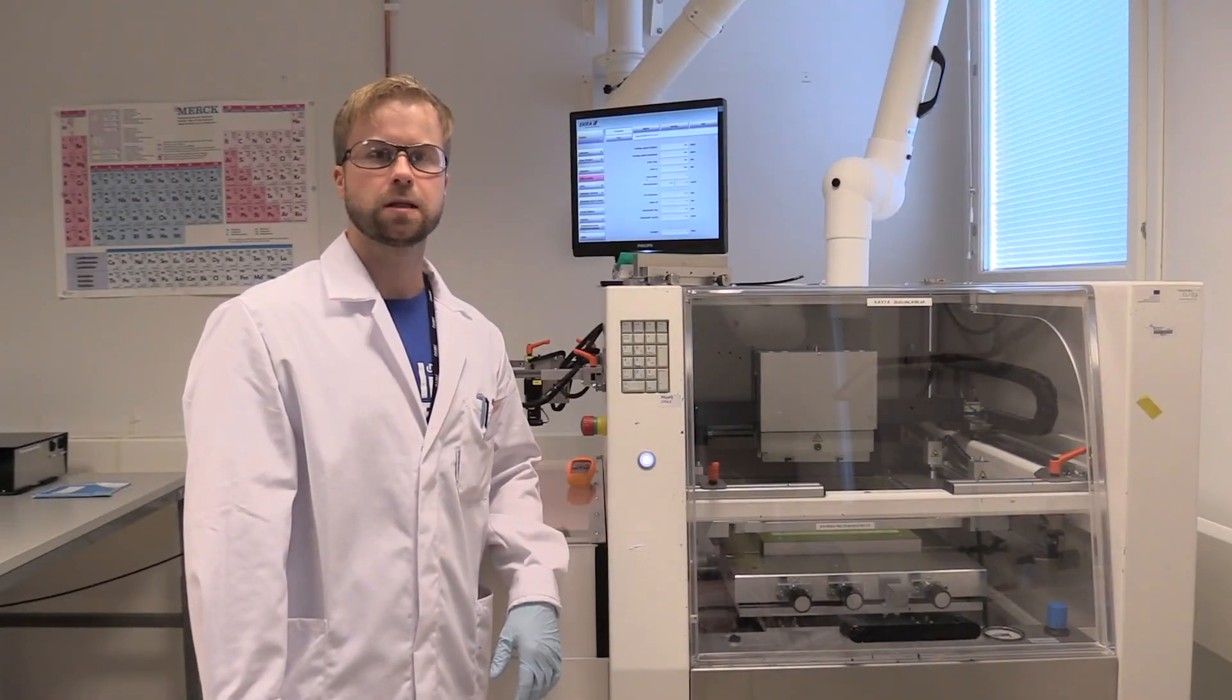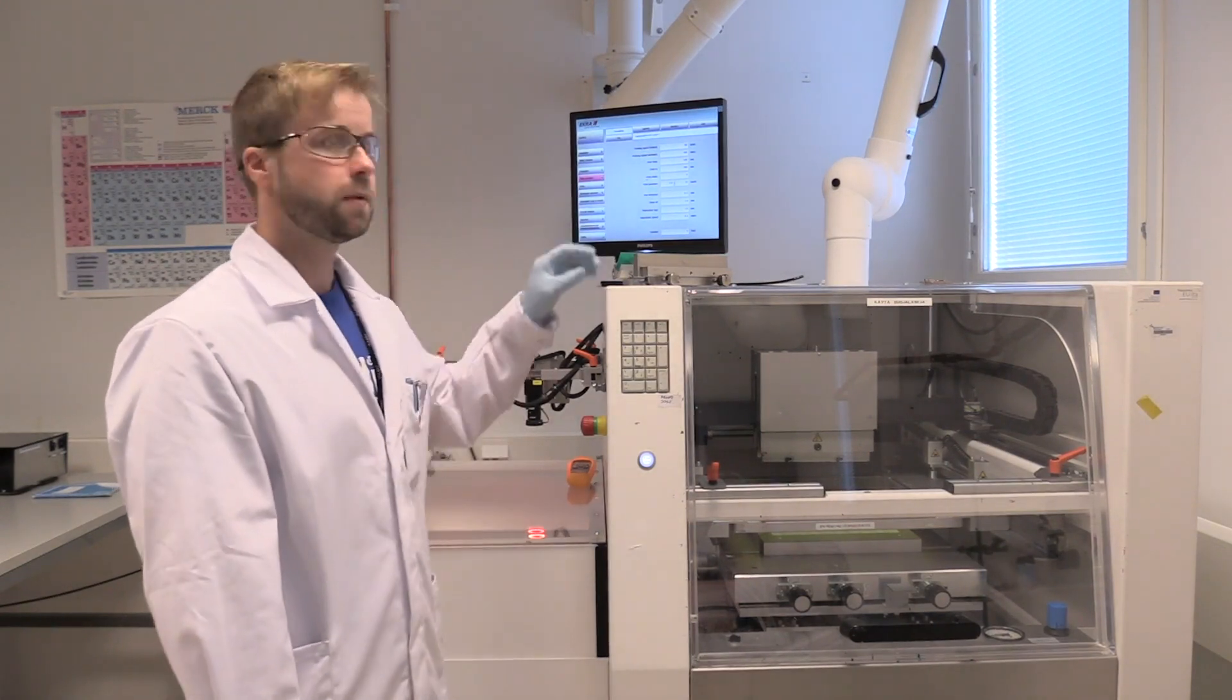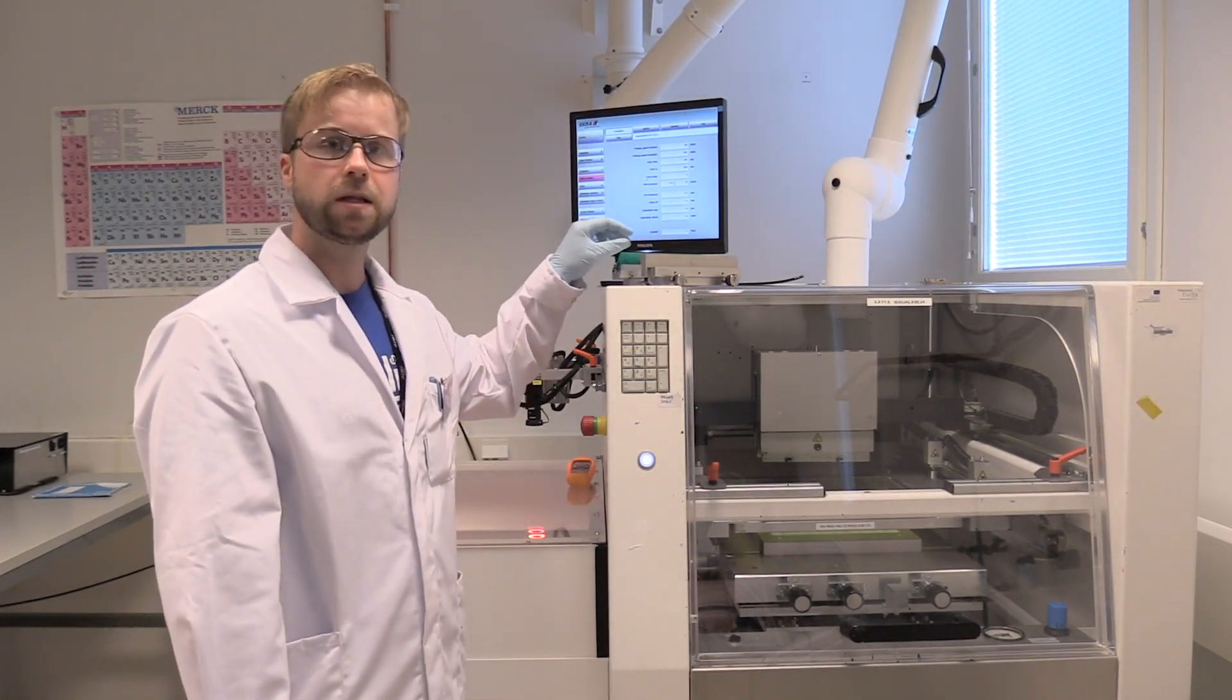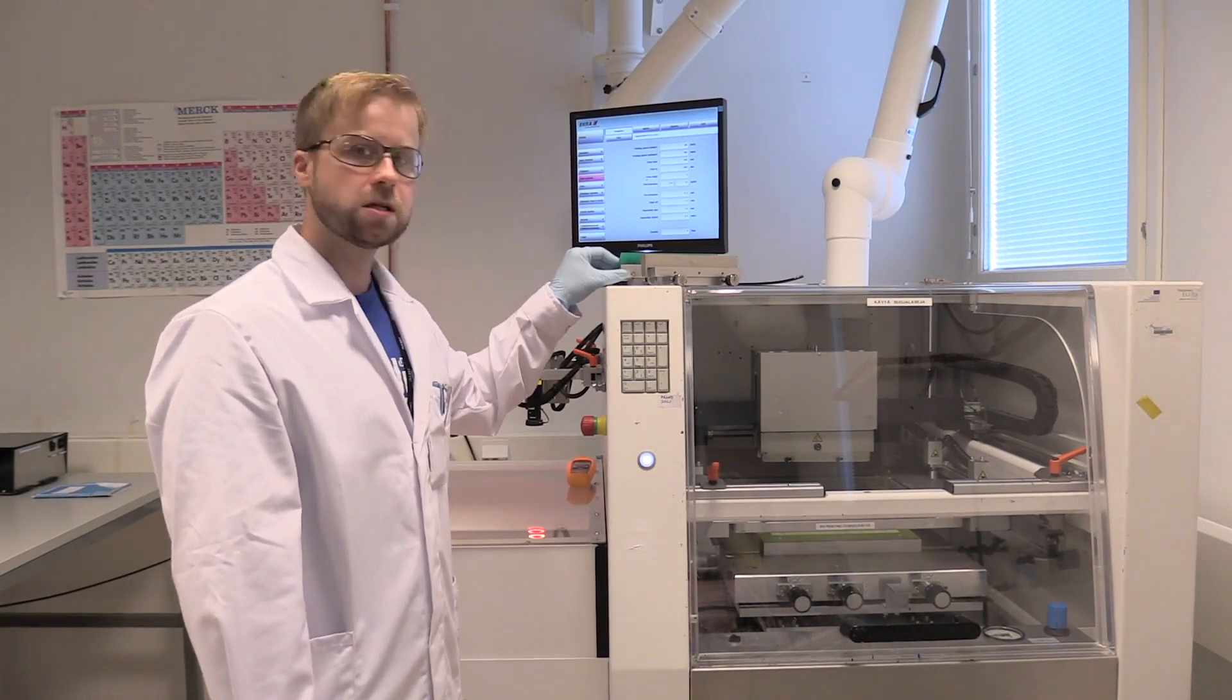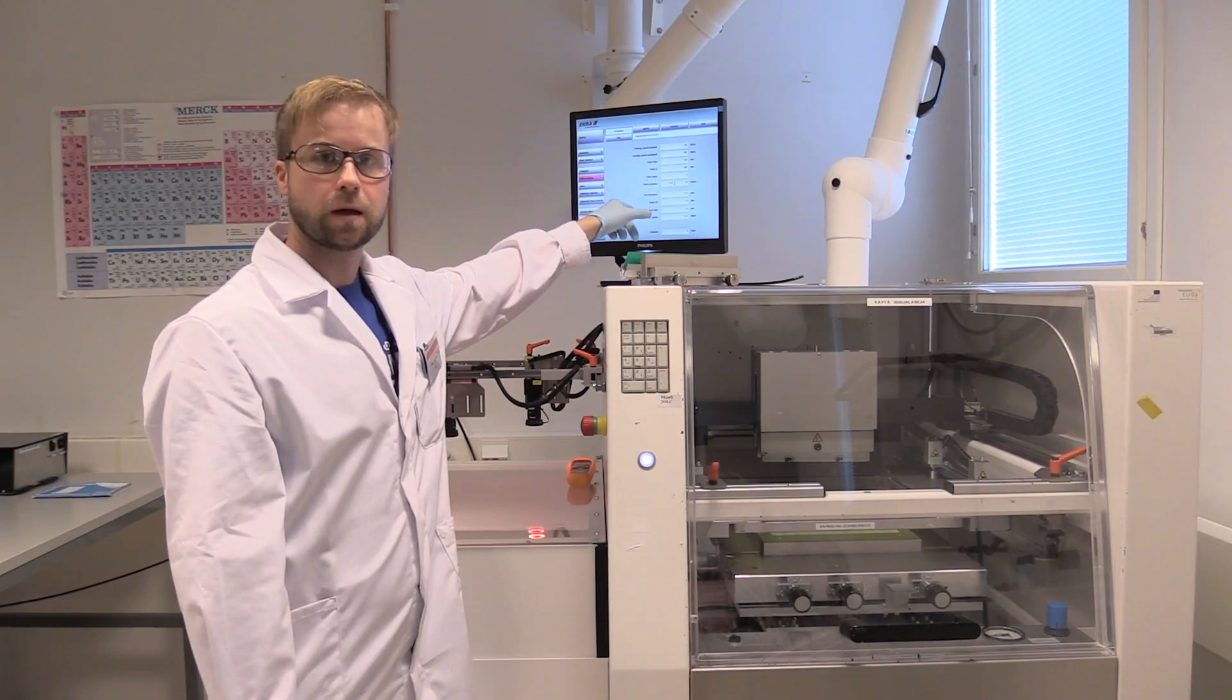Seuraavaksi laitetaan painolaite käyttökuntoon. Eli asetetaan musteenlevitin, asetetaan painolasta ja säädetään tarpeelliset parametrit laitteelle.